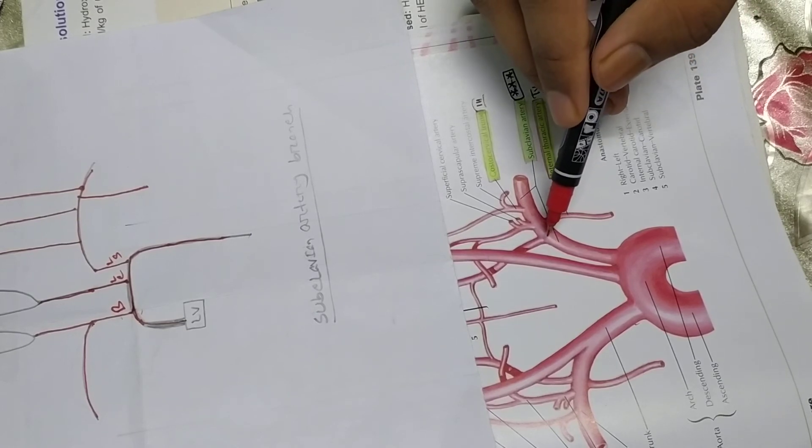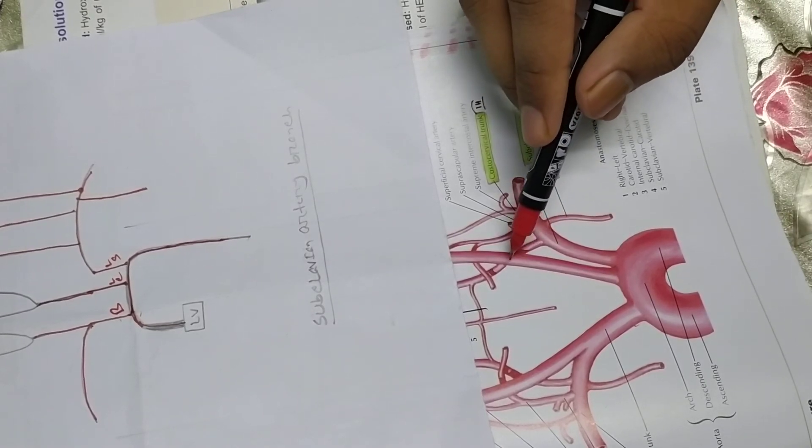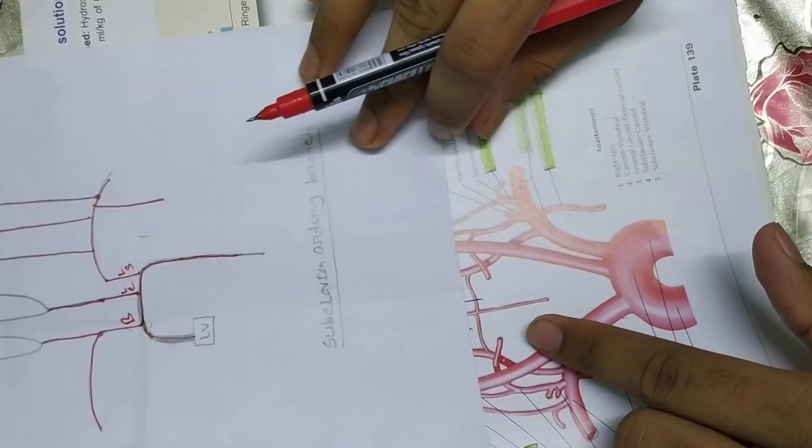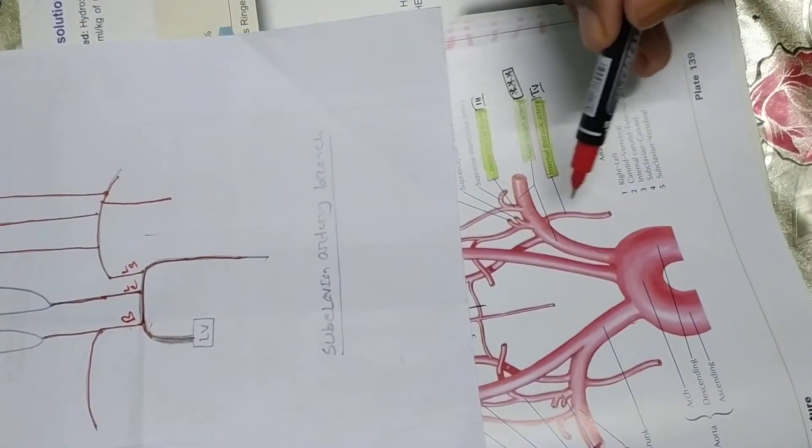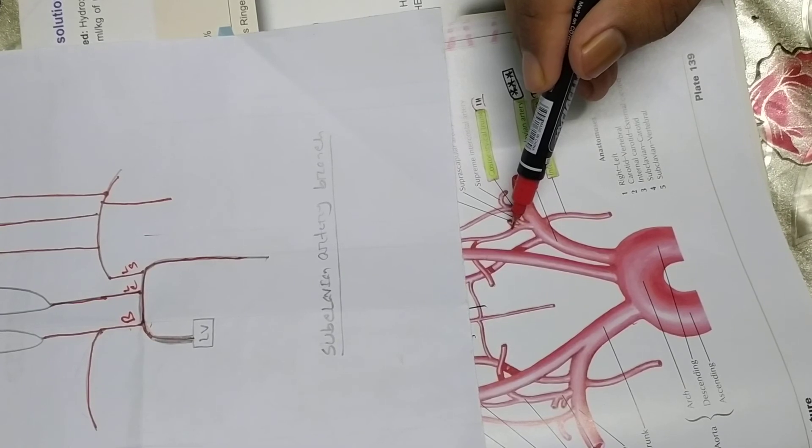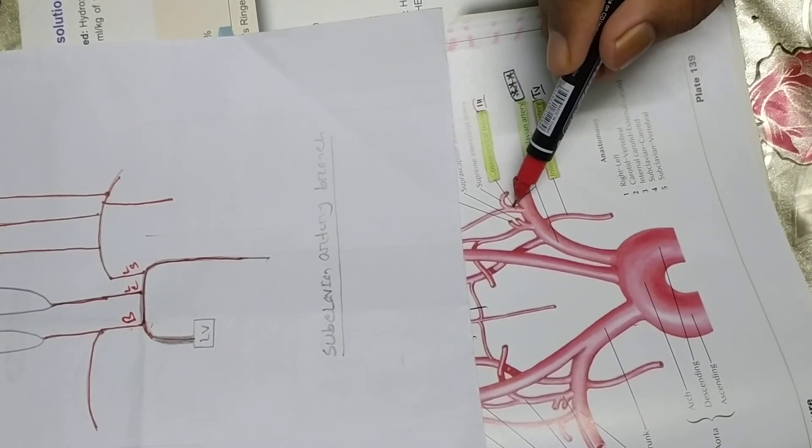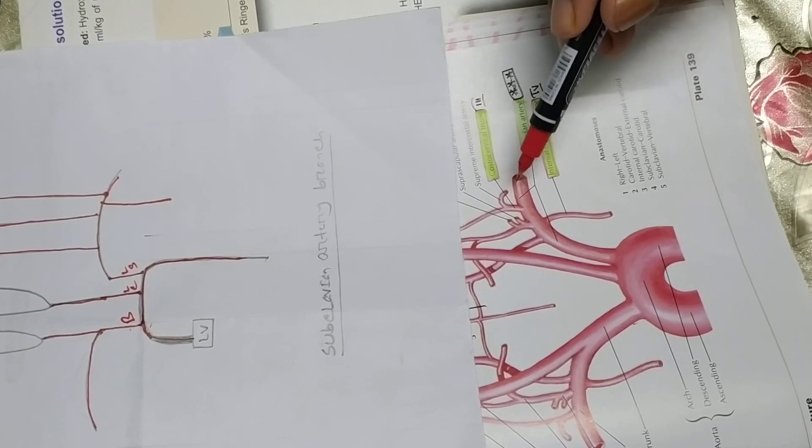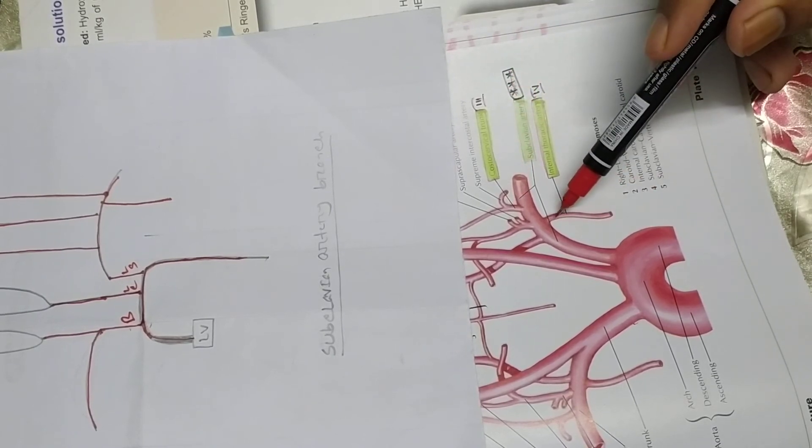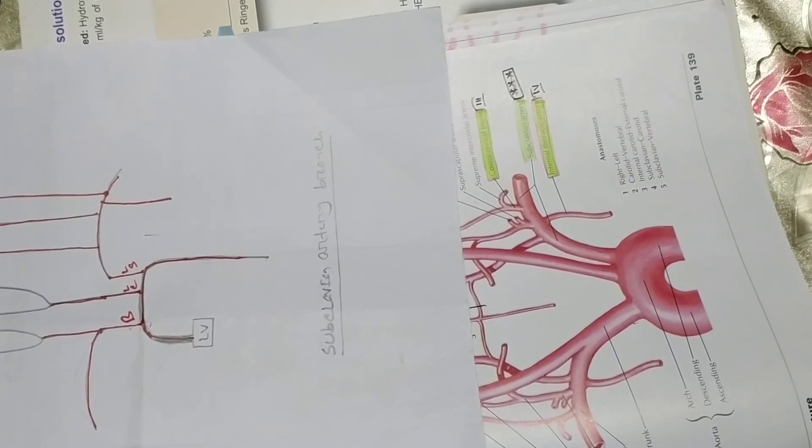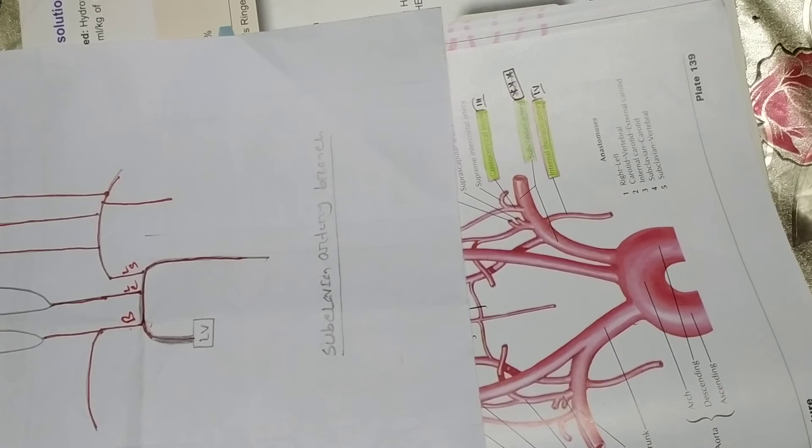It is a branch circle of the vertebral artery. It comes to the head. Then the branch is the thyrocervical trunk and costocervical trunk. So we have to see the branches.